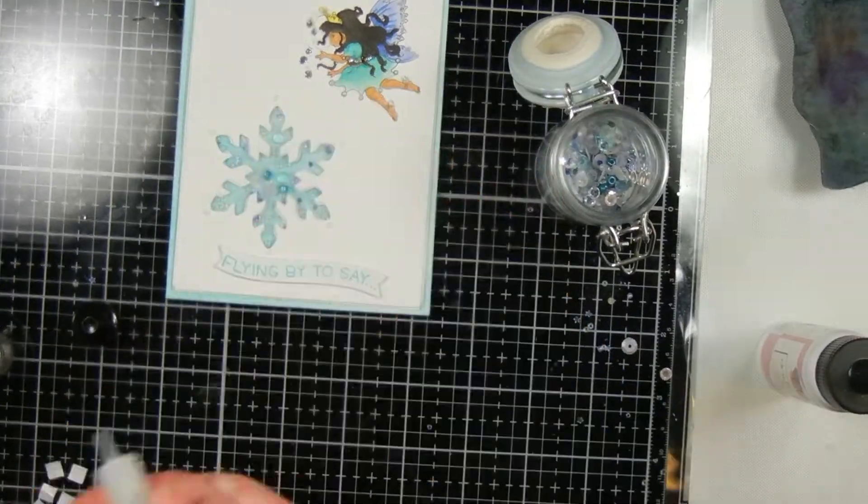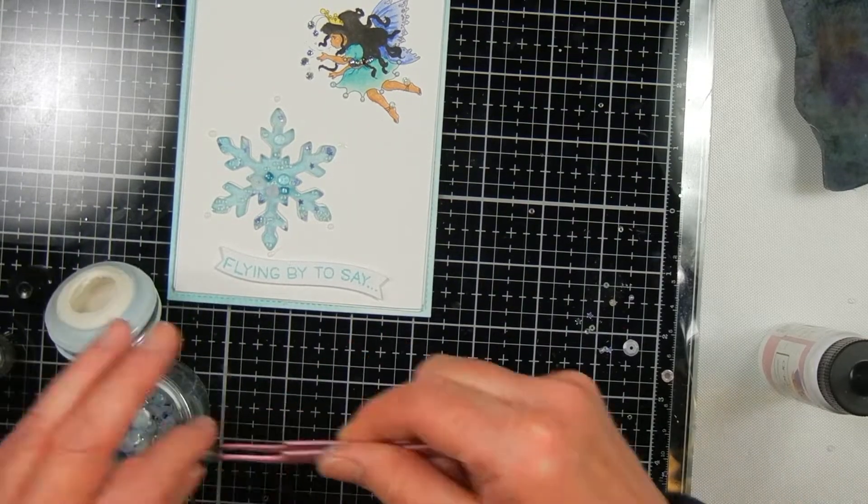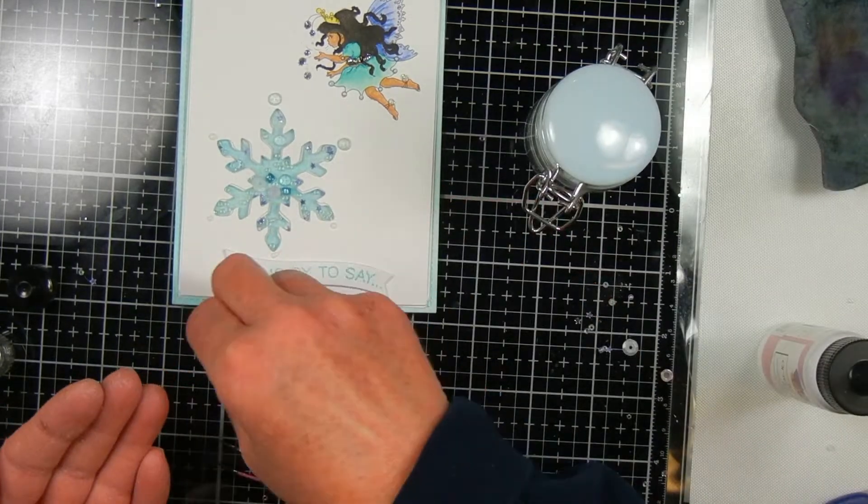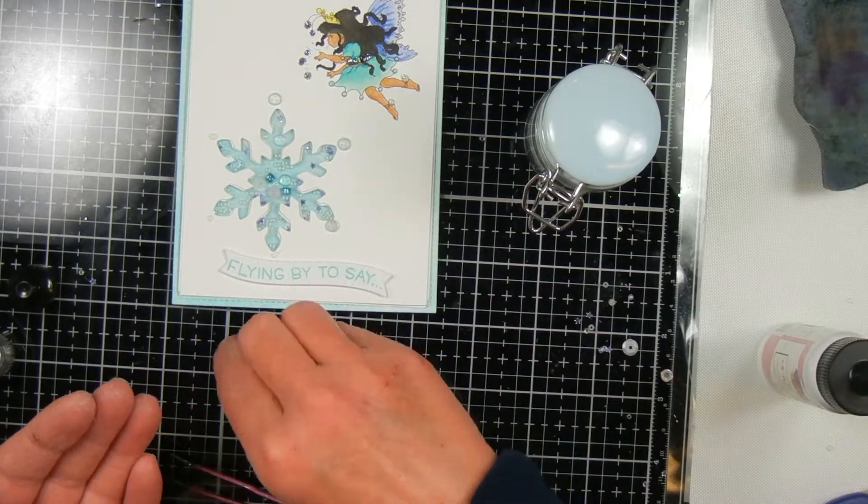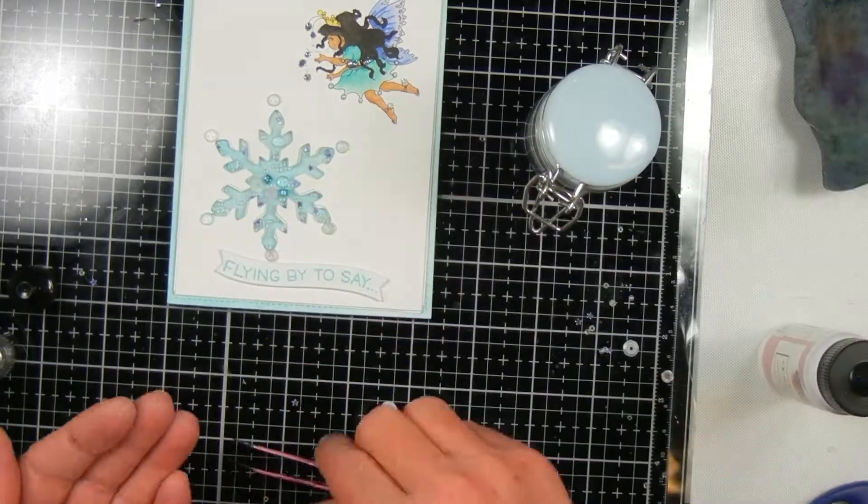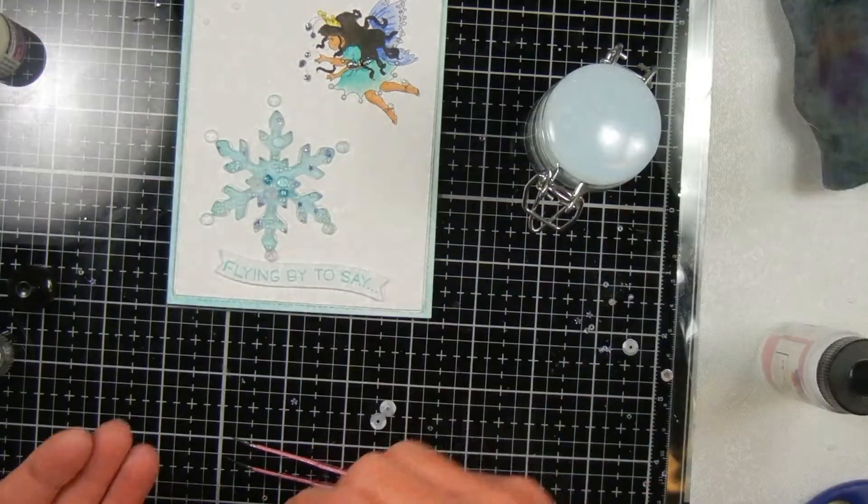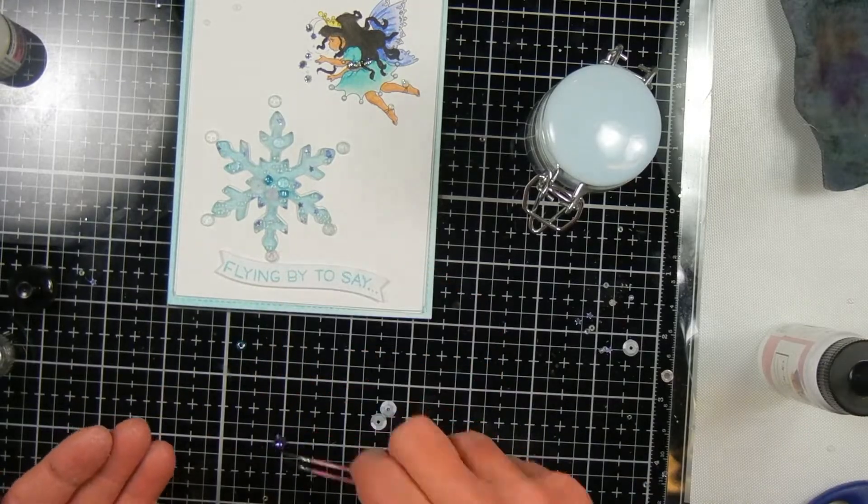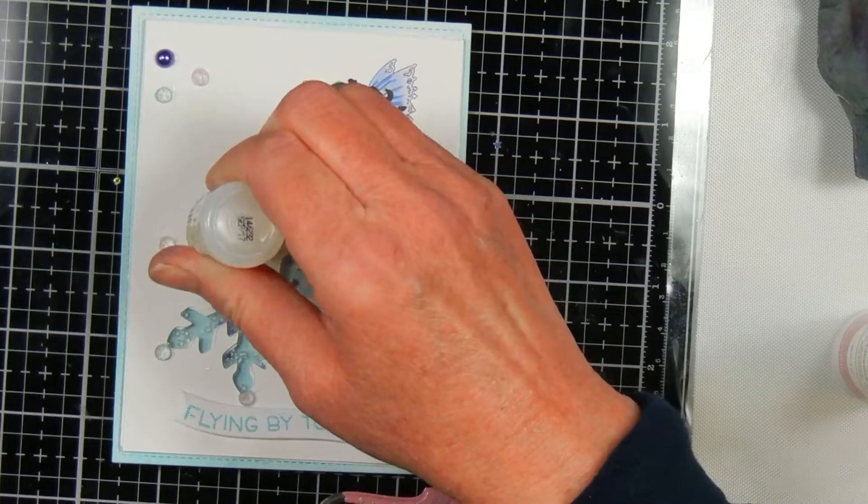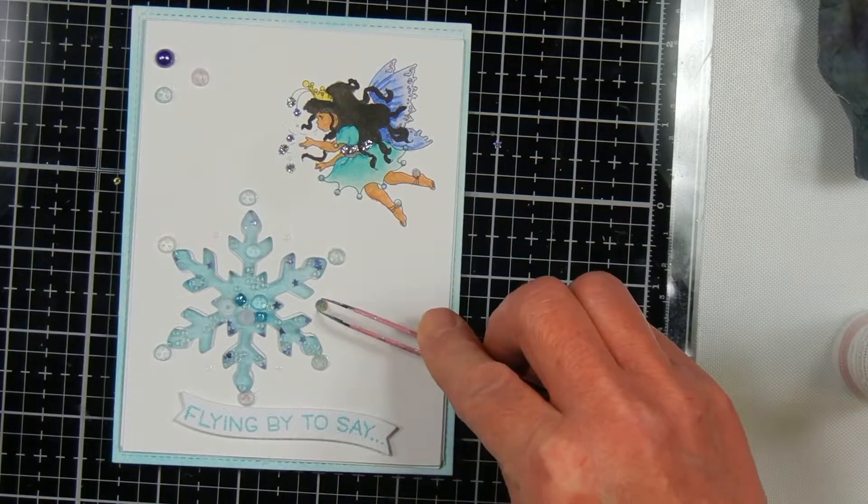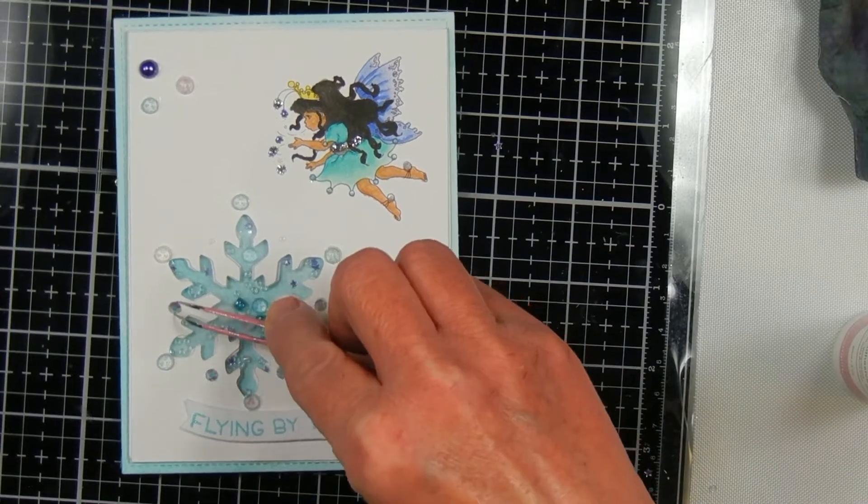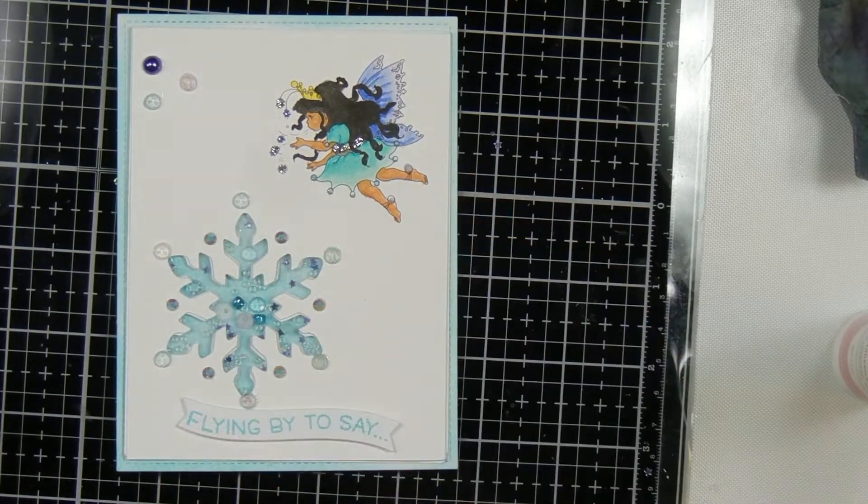Then I added some gems and little crystals from the Sailor Sky sparklets mix. I also have some jewels from Pretty Pink Posh in their aquamarine color. I put those around the snowflakes and also up in the top left hand corner of the card, but I turned the card on accident so that part isn't on the screen. I'm attaching those with glossy accents.